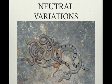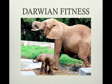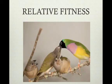Neutral variations are variations that don't give individuals an advantage or disadvantage, so their frequencies are not affected by natural selection. Darwinian fitness refers to the contribution an individual makes to the gene pool of the next generation compared to others in the population. Darwinian fitness is higher when more genes are passed on. Relative fitness is the contribution of a genotype to the next generation compared to alternate genotypes for the same locus. An individual who doesn't reproduce has a relative fitness of zero.